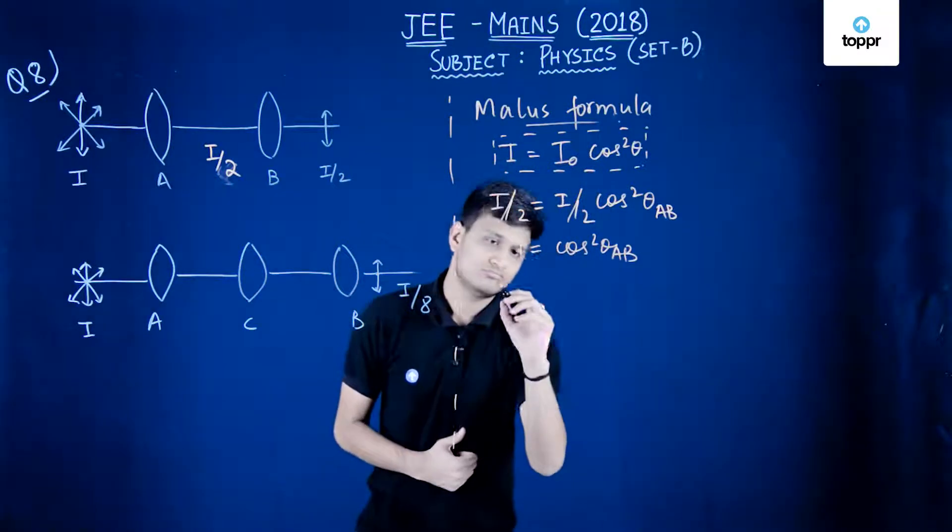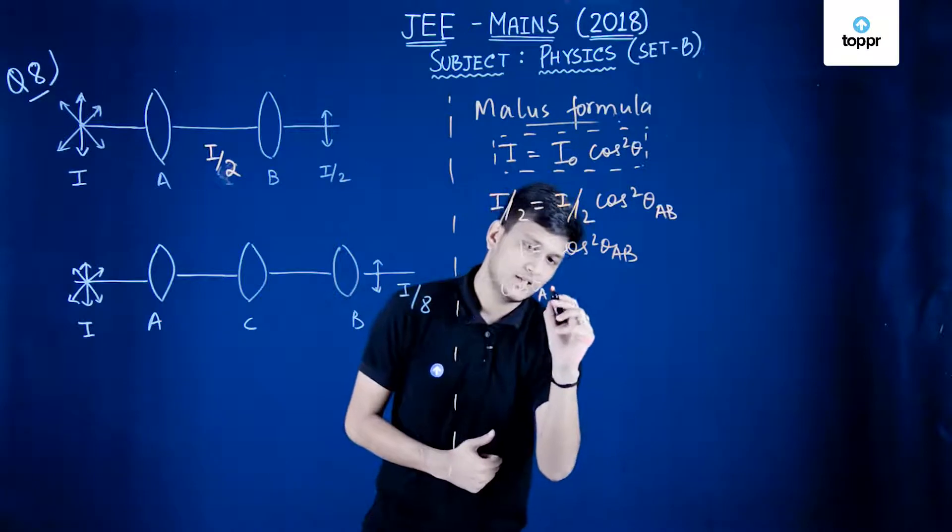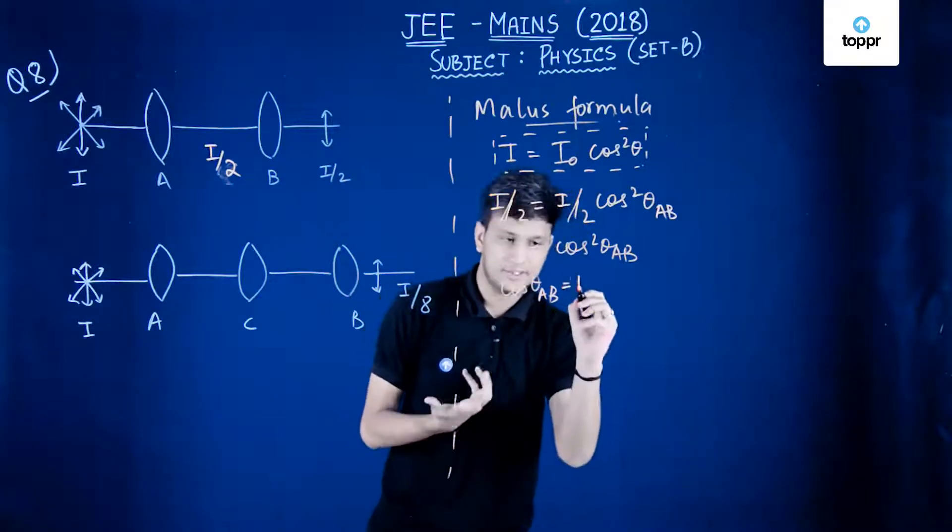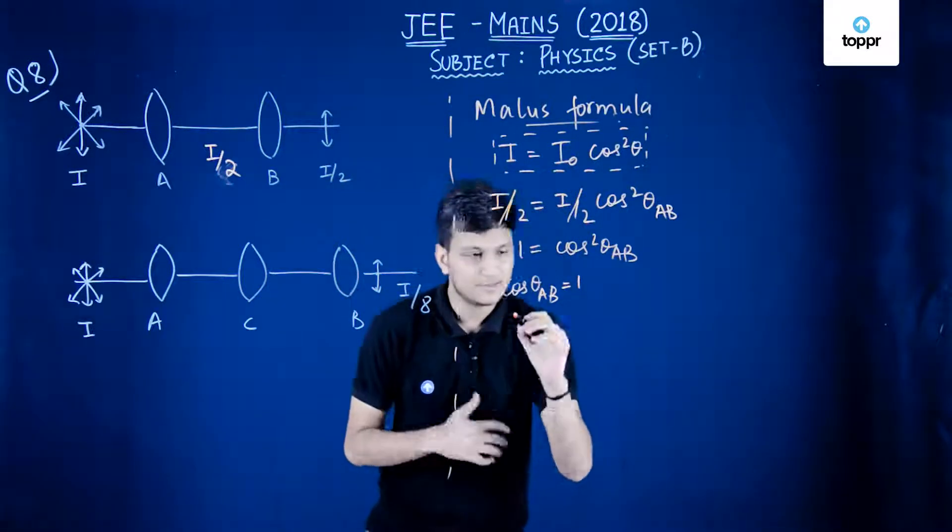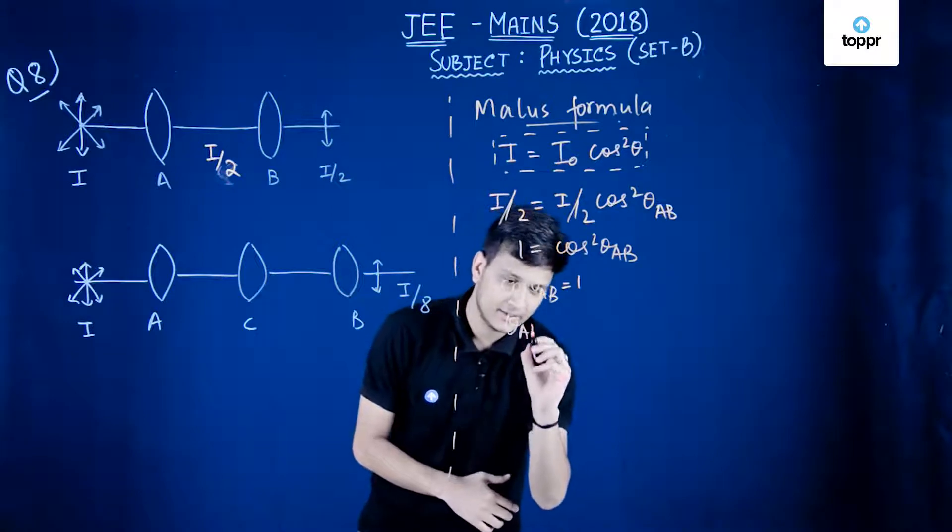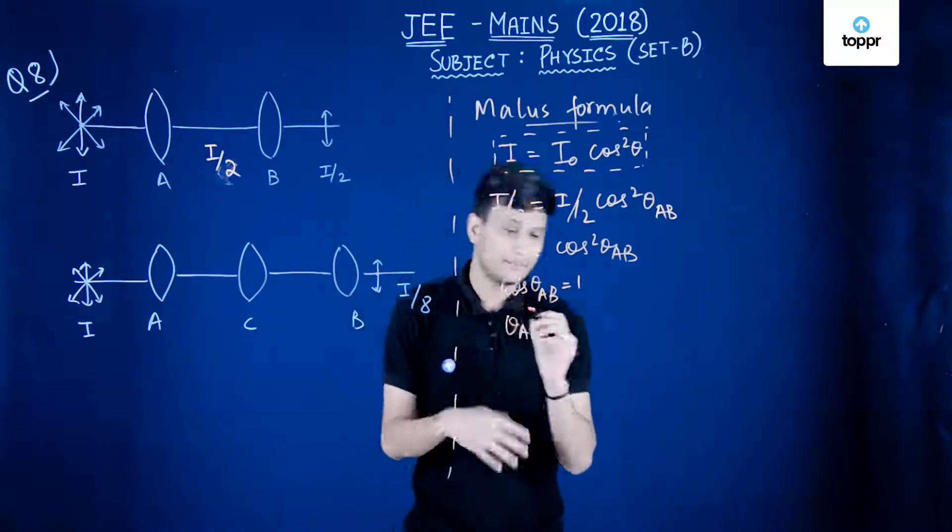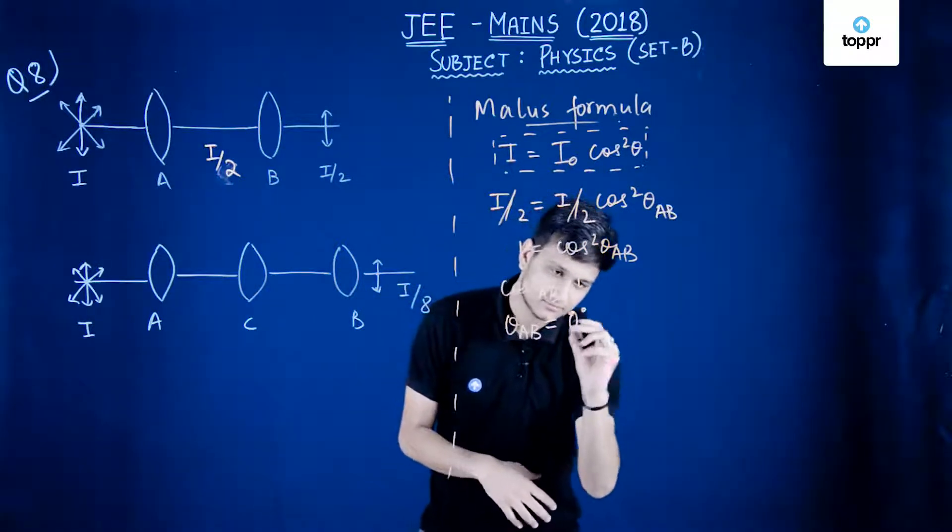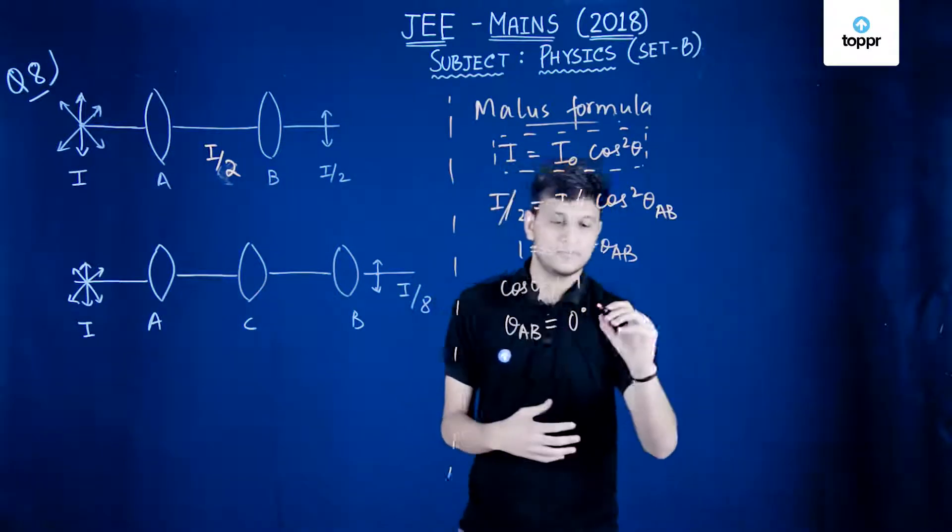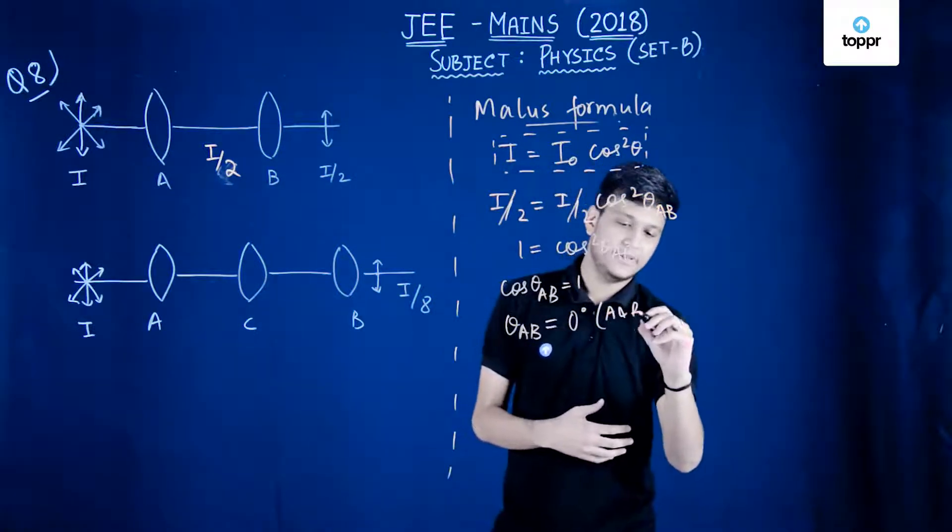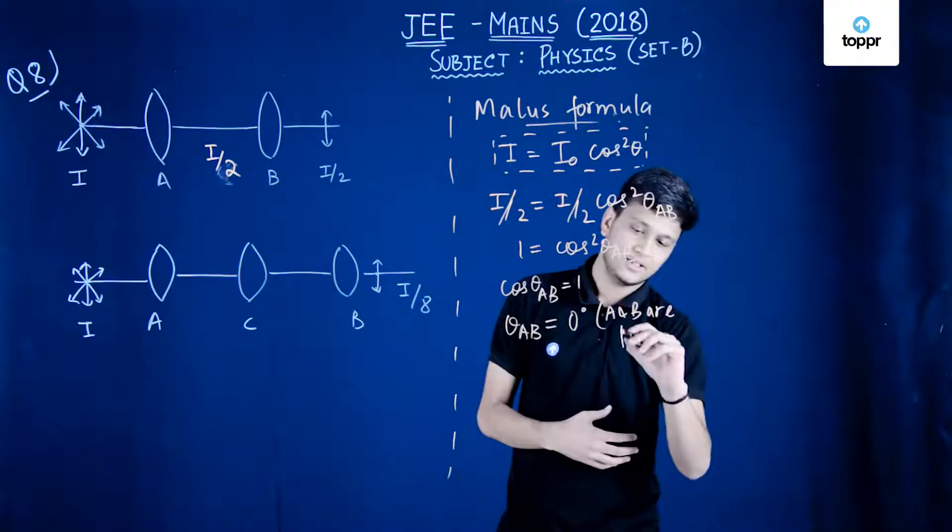So cos theta AB is still 1, which means that the angle between A and B, or theta AB, is 0 degrees, which means A and B are parallel.